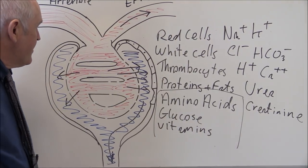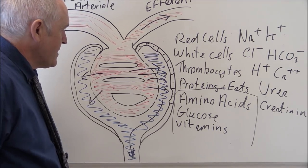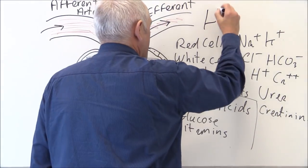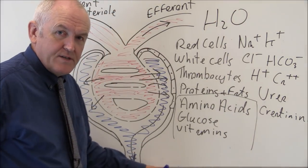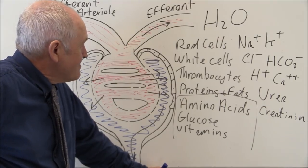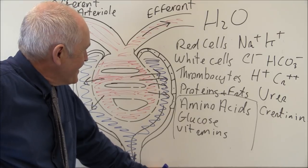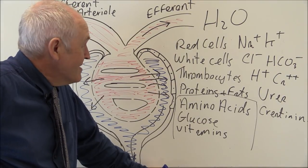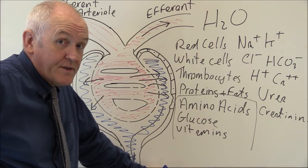That's the process of formation of glomerular filtrate. And of course water — a small molecule — is freely filtered into the glomerular filtrate, to the tune of 180 litres a day, or 125 ml per minute — the normal glomerular filtration rate in a healthy young adult.